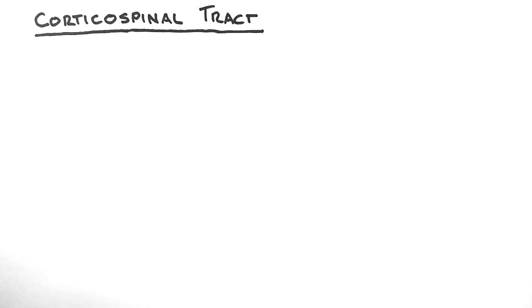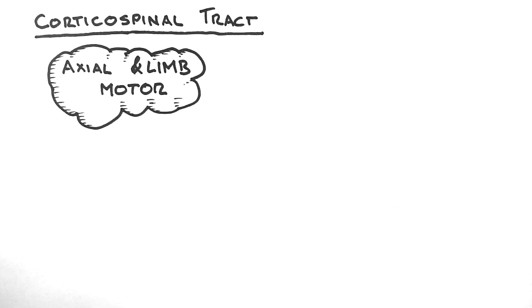The corticospinal tract is the pathway which conveys axial and limb motor control. In plain English, this is the pathway that lets the brain control the movement of muscles.